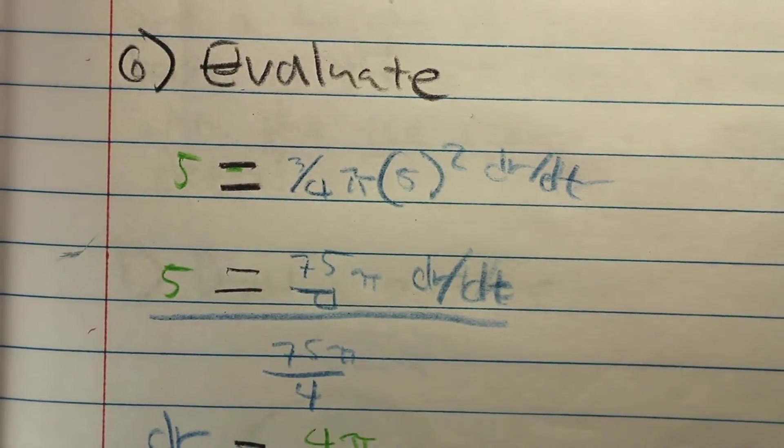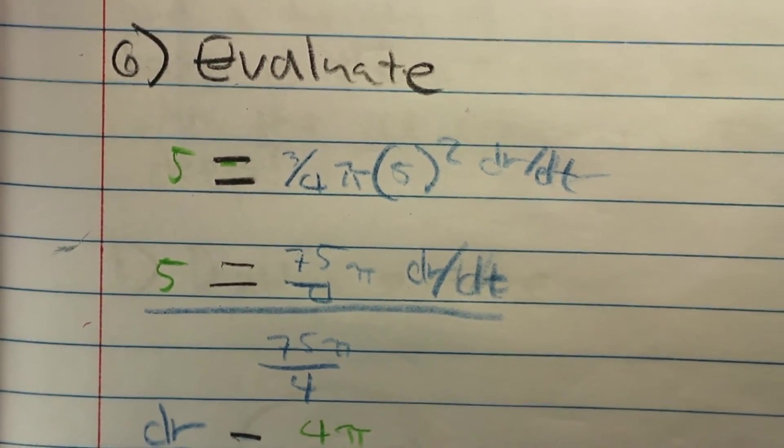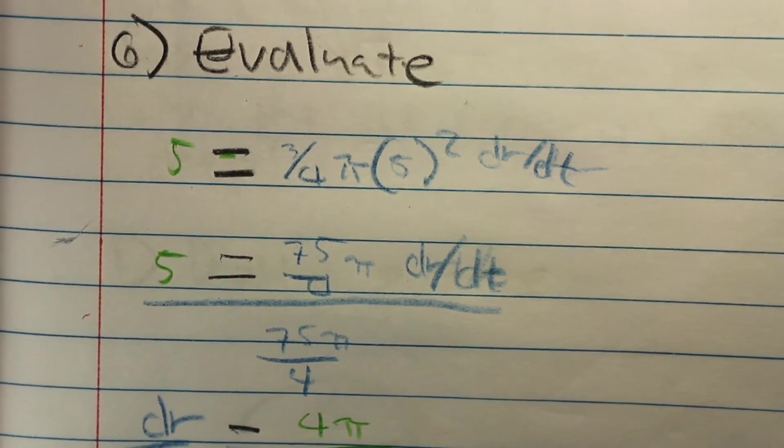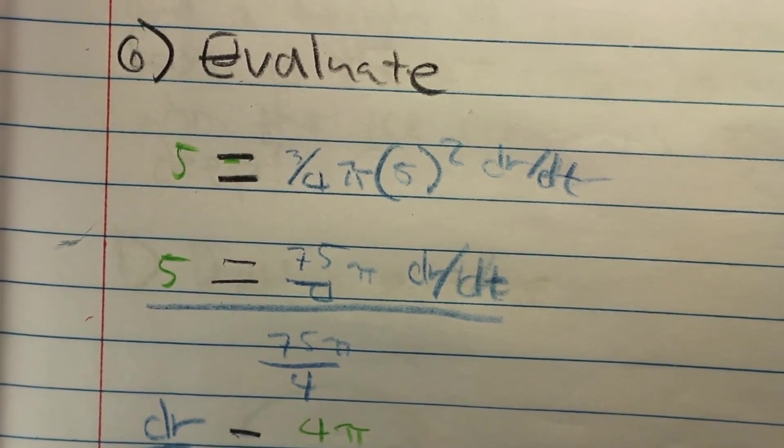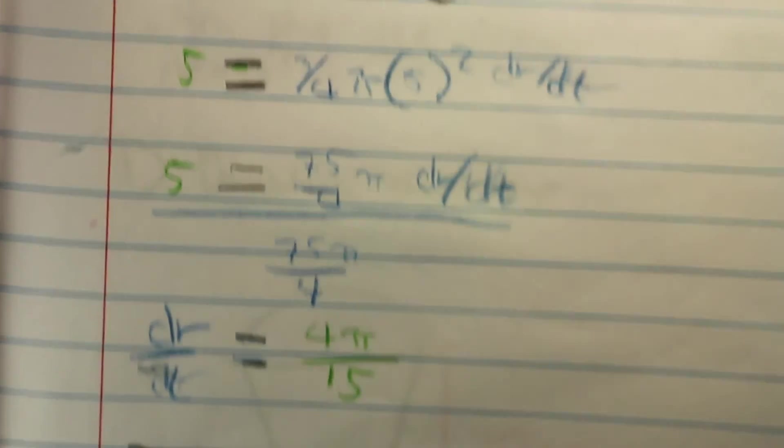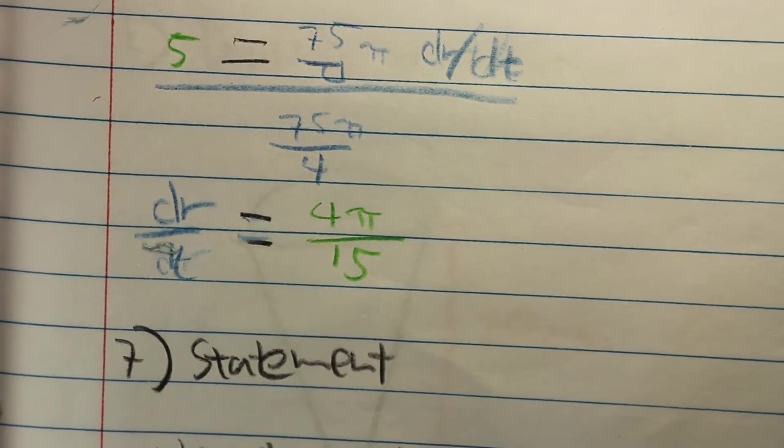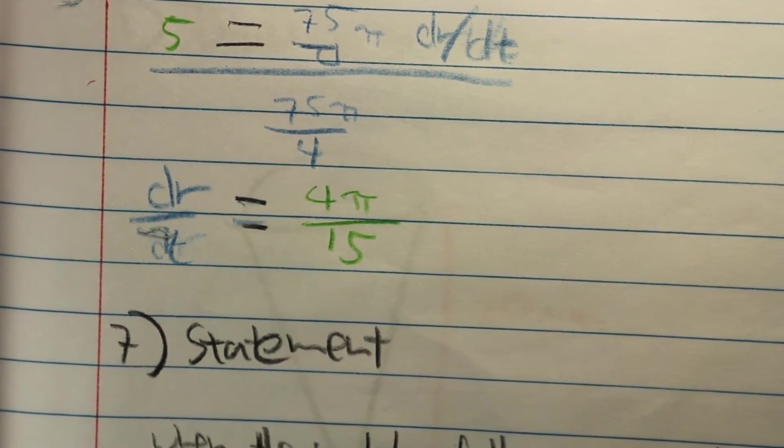Once you have that down, you can plug in the known information and evaluate for it. 5 equals 3/4 π times 5² dr/dt, and you would find out that dr/dt is indeed equal to 4π over 15.